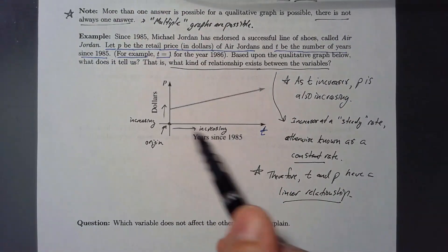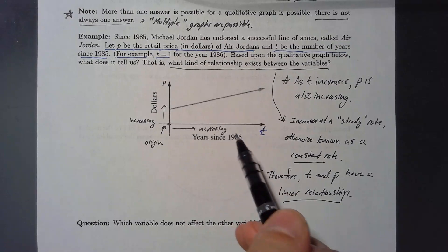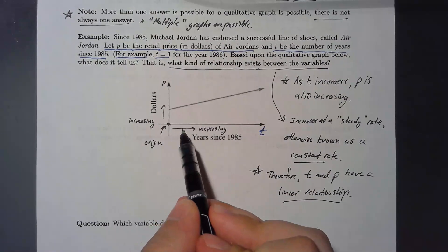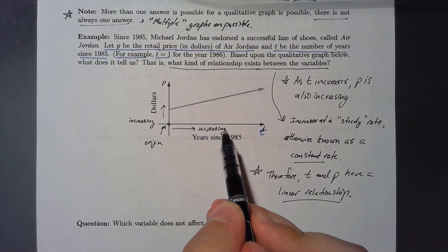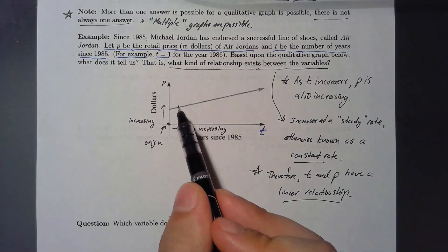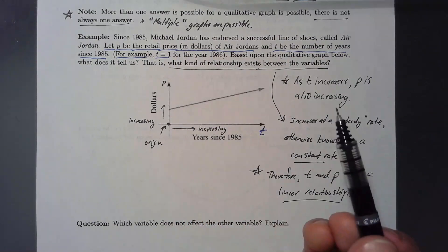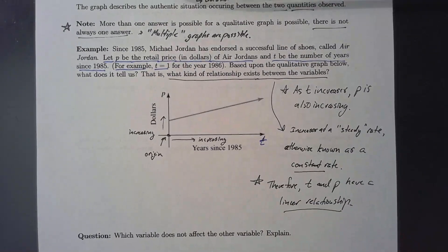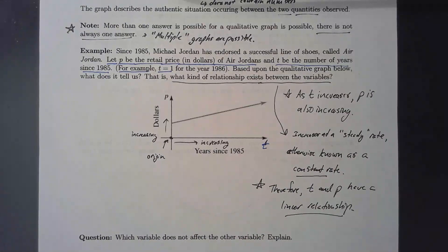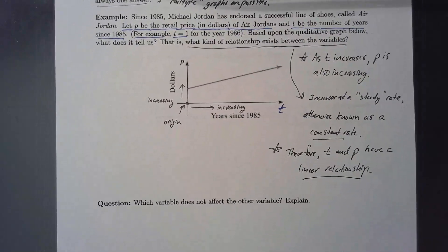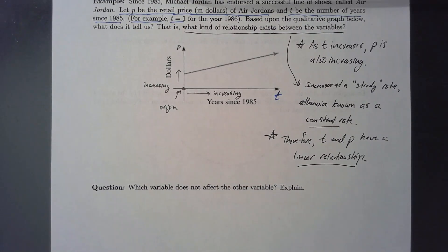That makes sense, because as the years go on since 1985 — 1986, 87, 88, 89, 90, 91 — the price of the shoes keeps going up. Why? Michael Jordan was a pretty popular person in the 80s and 90s, so anything he's going to sell is going to be more and more expensive. That's the realistic interpretation of that scenario.